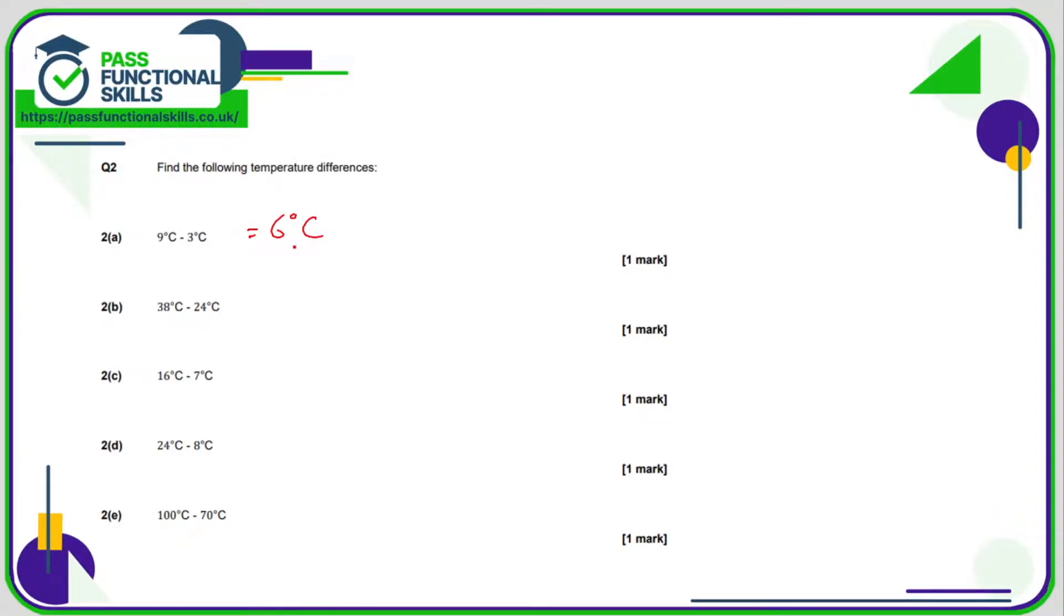We are allowed to use a calculator for question two, although for most of them it's relatively straightforward. But use a calculator if you need to. 38 minus 24 is 14. 16 take away 7 is 9. 24 minus 8 is 16. 100 minus 70 is 30.